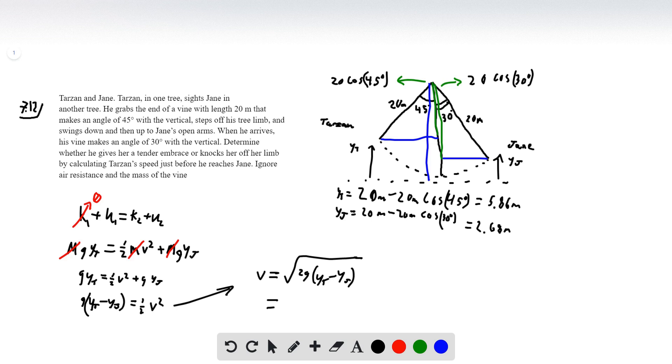I'm going to take v is equal to the square root of 2g Y_Tarzan minus Y_Jane. So from here it's just numbers. So we have 2 times g times the difference here, so then that's going to give us the square root of a number, and then we're going to take the square root and we're going to find that 7.9 meters per second.